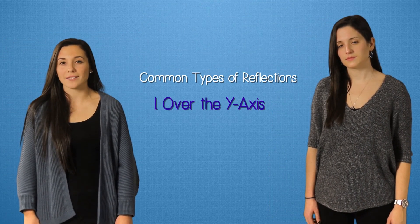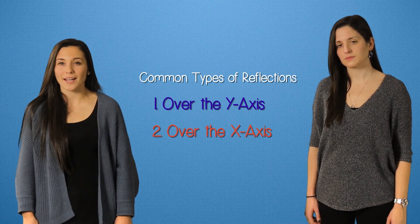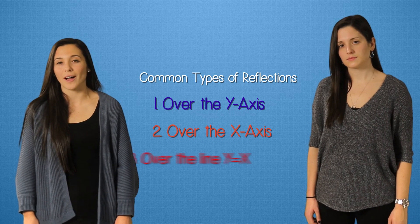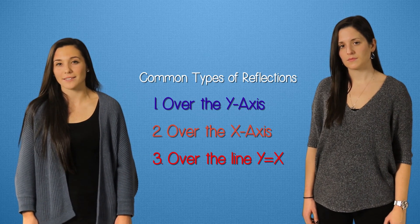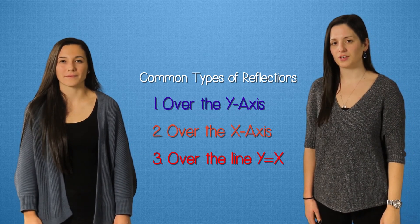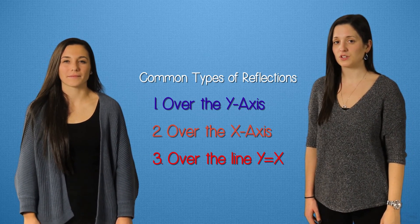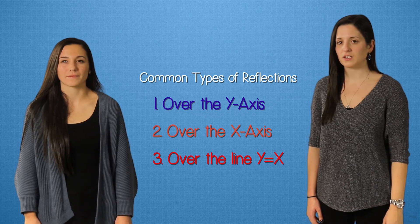The most common types of reflections are over the y-axis, over the x-axis, and over the line y equals x. Let's take a look at all three of these using triangle ABC.